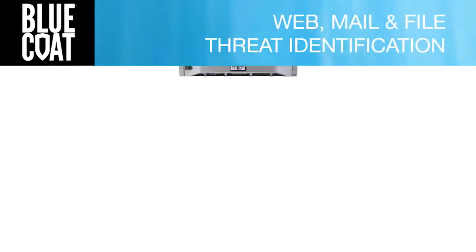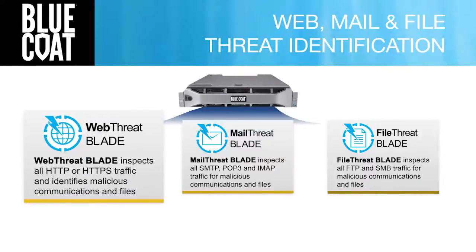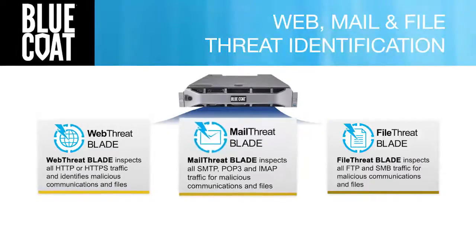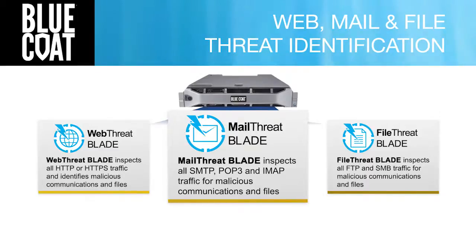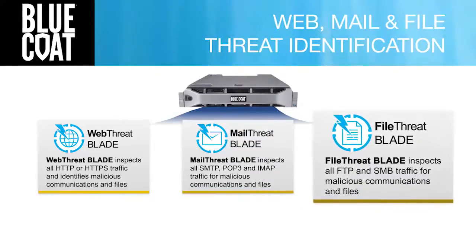Here's a quick look at how the ThreatBlades work together. Web traffic is analyzed for any known malicious web-based traffic. The Web ThreatBlade, powered by Bluecoat Global Intelligence Network, leverages the intelligence from 15,000 customers and 75 million endpoints, reporting on billions of web and URL threats. The Mail ThreatBlade inspects all email traffic, including attachments, for any known malicious threats, also leveraging intelligence from the Global Intelligence Network. The File ThreatBlade analyzes file traffic like FTP and SMB, and compares those files against a collection of known good and bad file intelligence — basically known whitelists or blacklists.